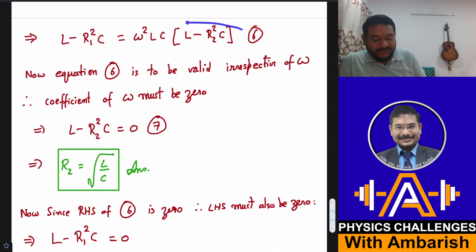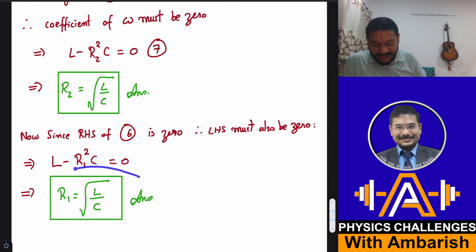And now if RHS of this is 0, LHS must also be 0. So L minus R1 square C must also be 0. So that gives you R1 is equal to under root L by C. So that was my analysis of the problem.